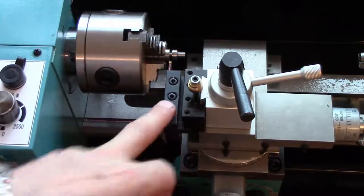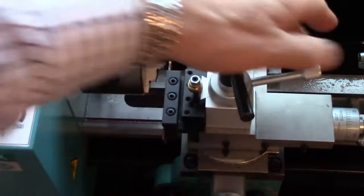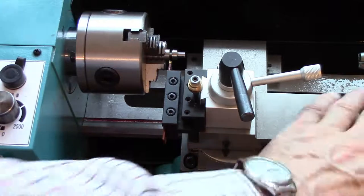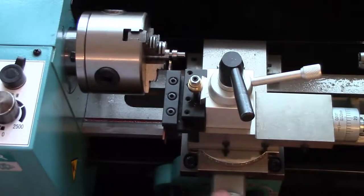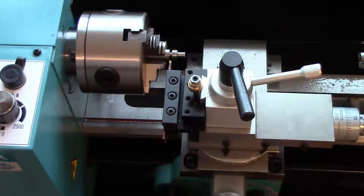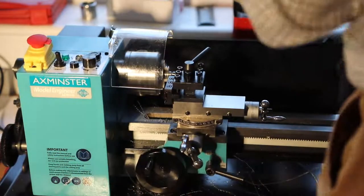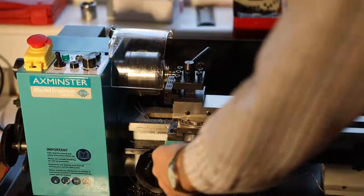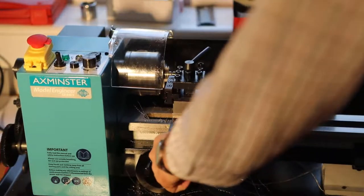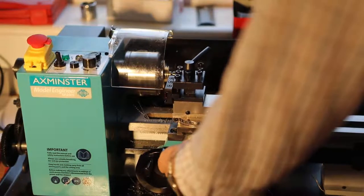So I put this tool in the quick-release tool holder. Made sure all these bolts were up tight. Made sure this was tight. Made sure that was tight. Lined it up. And started to part off this stainless steel thing. And this is what happened.